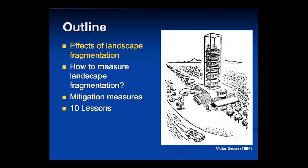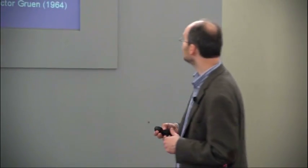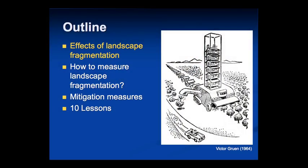This is the outline of my talk. First, I want to present some important effects of landscape fragmentation, then tackle how to measure it, talk about mitigation measures, and conclude with ten lessons. And about this drawing here — the striking feature is it's not new; it was done in 1964. So this is an old problem, and we are still suffering from it.